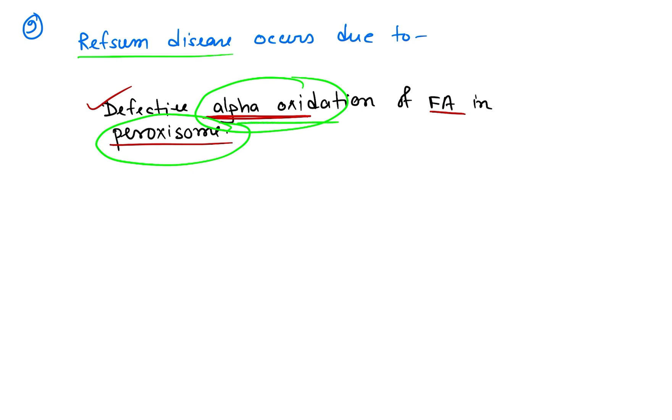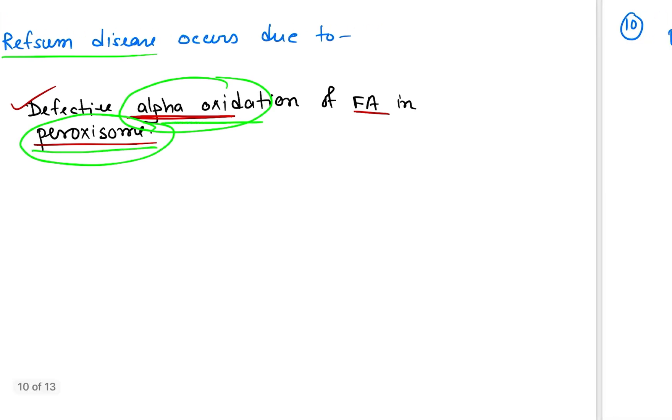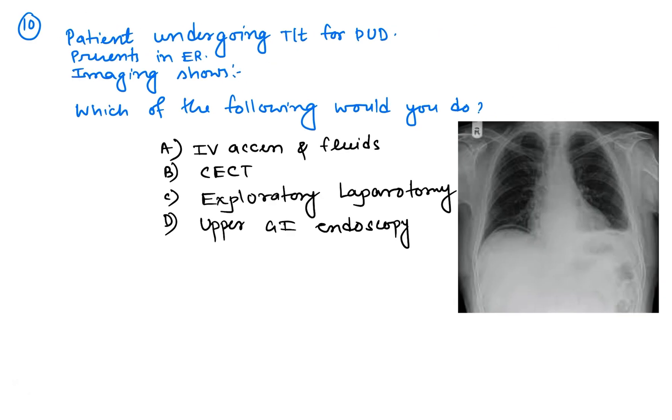Question number ten: Patient undergoing treatment for PUD or peptic ulcer disease presented with imaging. Chest X-ray and straight X-ray abdomen done showing this image. The image shows nothing but gas under diaphragm or pneumoperitoneum. So the best management for this patient is immediate resuscitation with IV fluid followed by exploratory laparotomy. This is resuscitation and exploratory laparotomy is the best answer. So the correct answer is A and C, one and three is the correct answer.